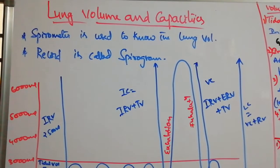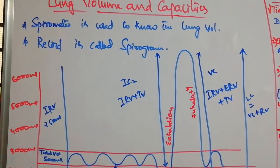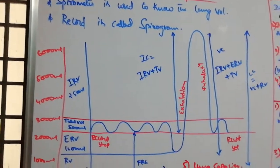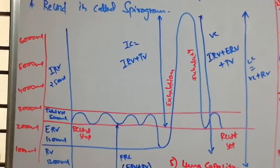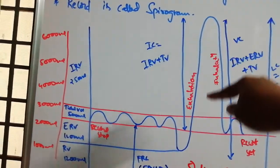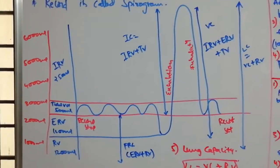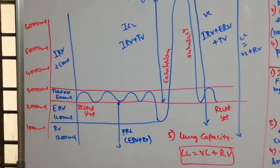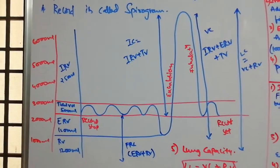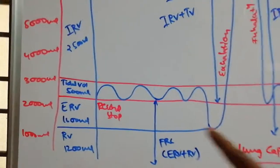The next topic is lung volumes and capacities. A spirometer is used to measure lung volumes and capacities, and the record it produces is called a spirogram. The spirogram records normal inhalation and exhalation, deep inhalation, and exhalation, giving us the lung volumes and capacities.